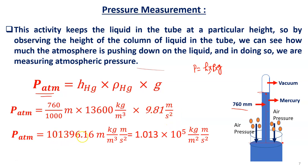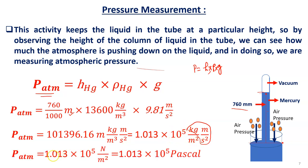The calculation gives 101,396.16 kg/(m·s²), which is Newton per meter squared. Reorganizing the units gives 1.013 × 10⁵ N/m². Since Newton per meter squared equals Pascal, 1 atm equals 1.013 × 10⁵ Pascal. From the mercury barometer reading of 760 mm, we can directly calculate atmospheric pressure.